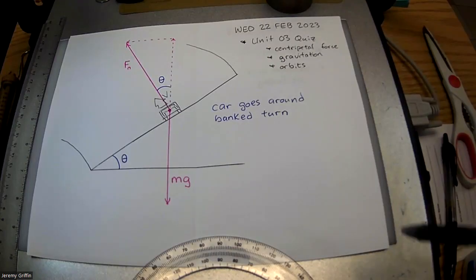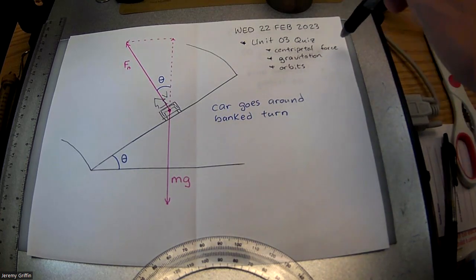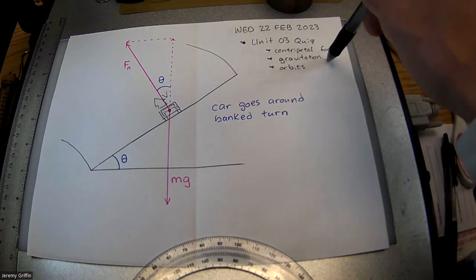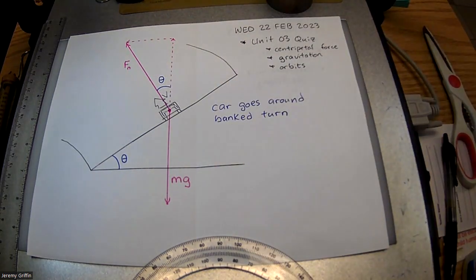It's rolling. It's Wednesday, February 22nd. You guys have the Unit 3 quiz in front of you, so that's centripetal force, gravitation, and orbits. Here's a free body diagram to help you out with one of those.